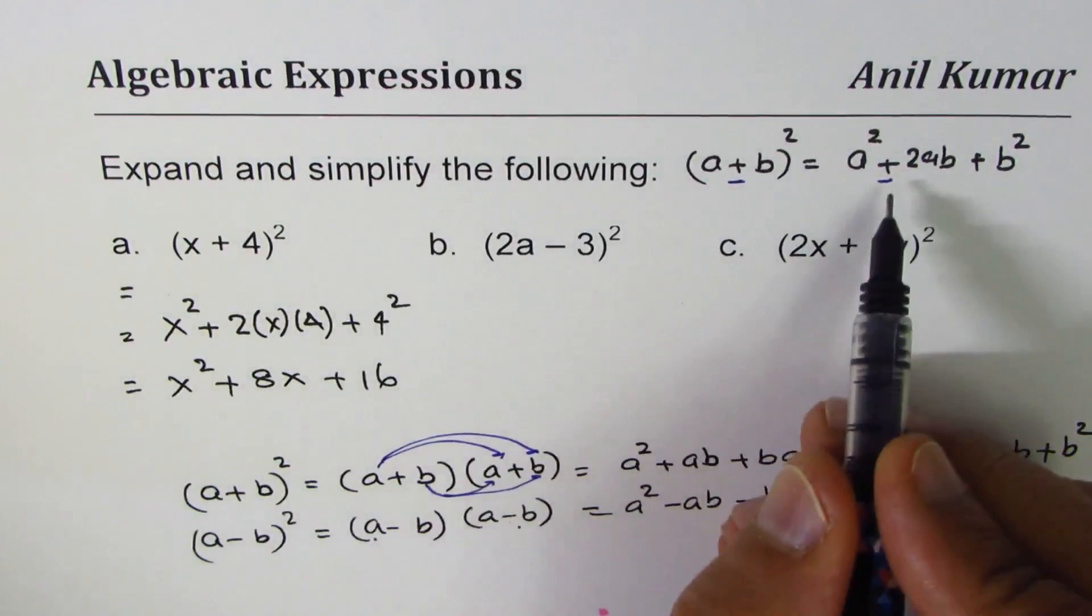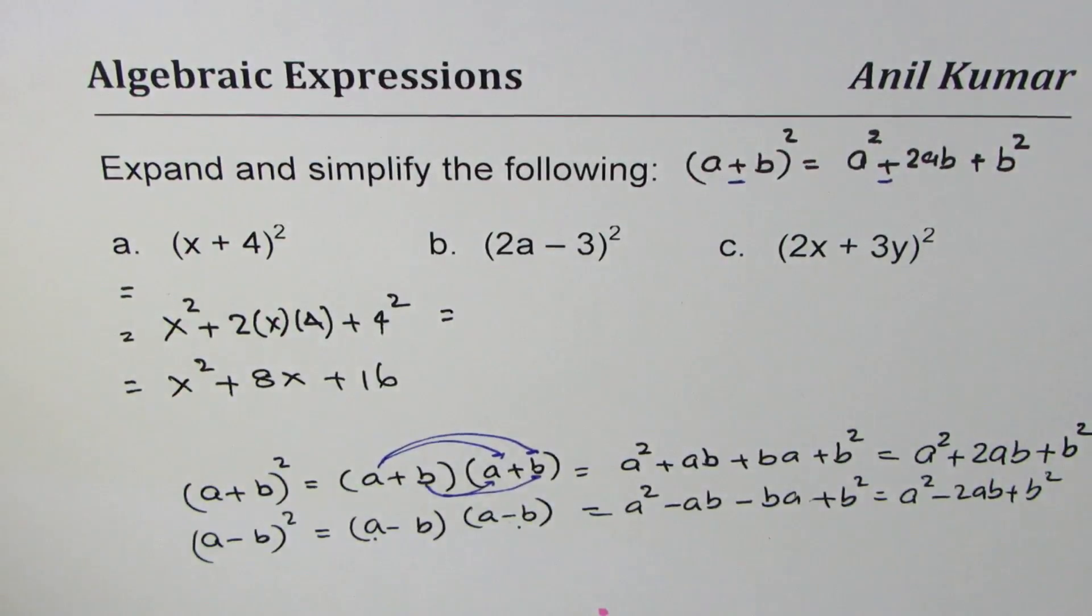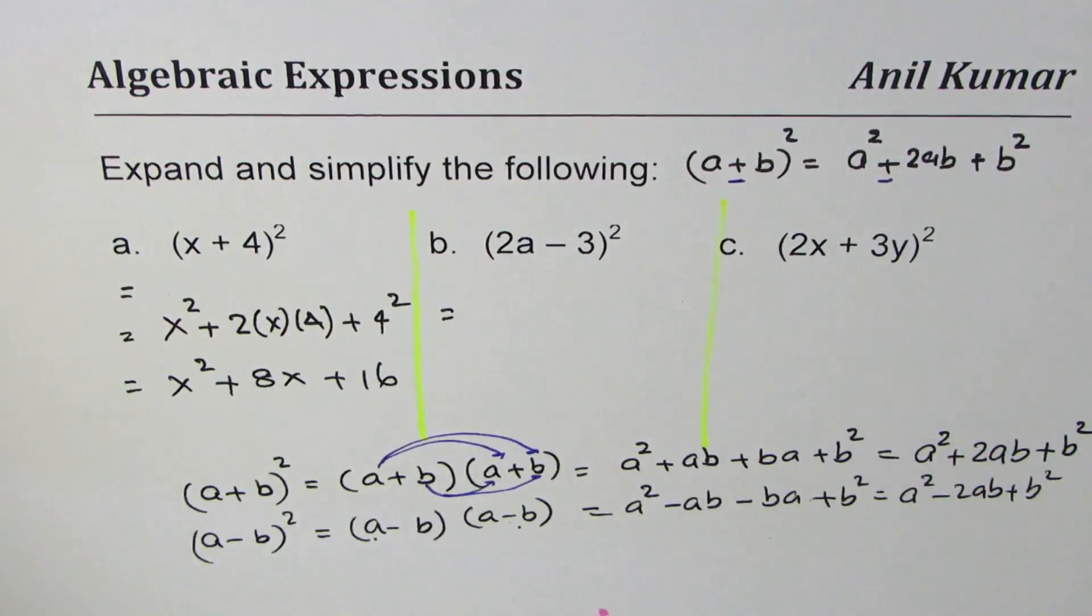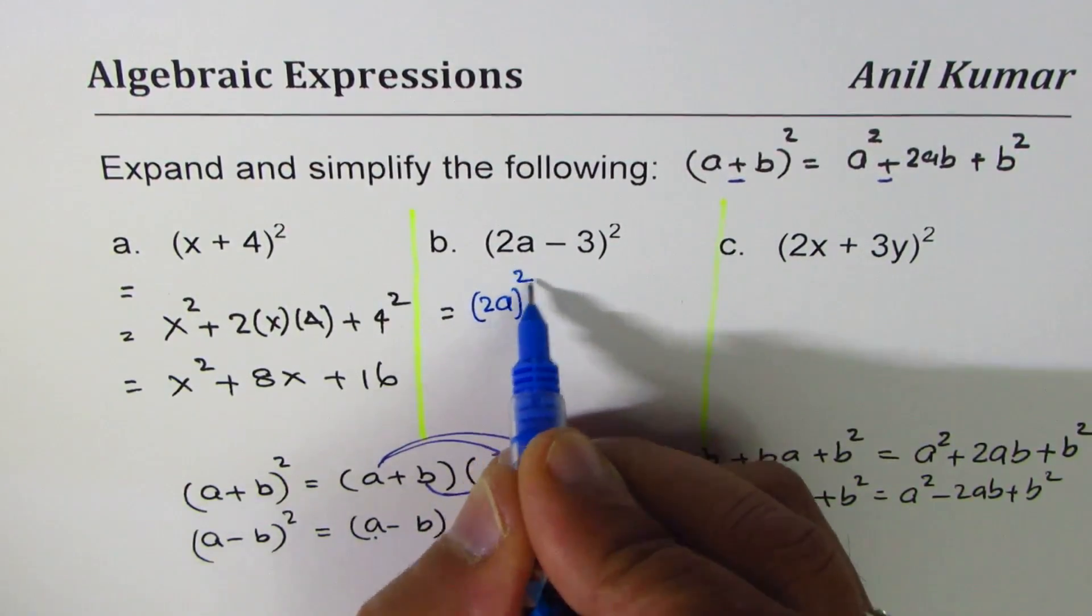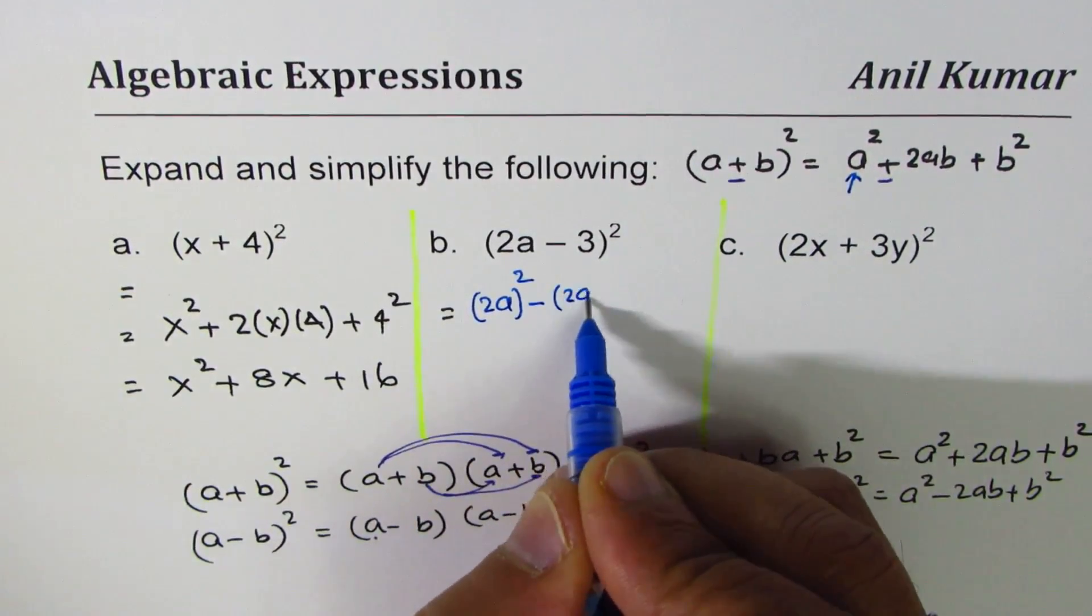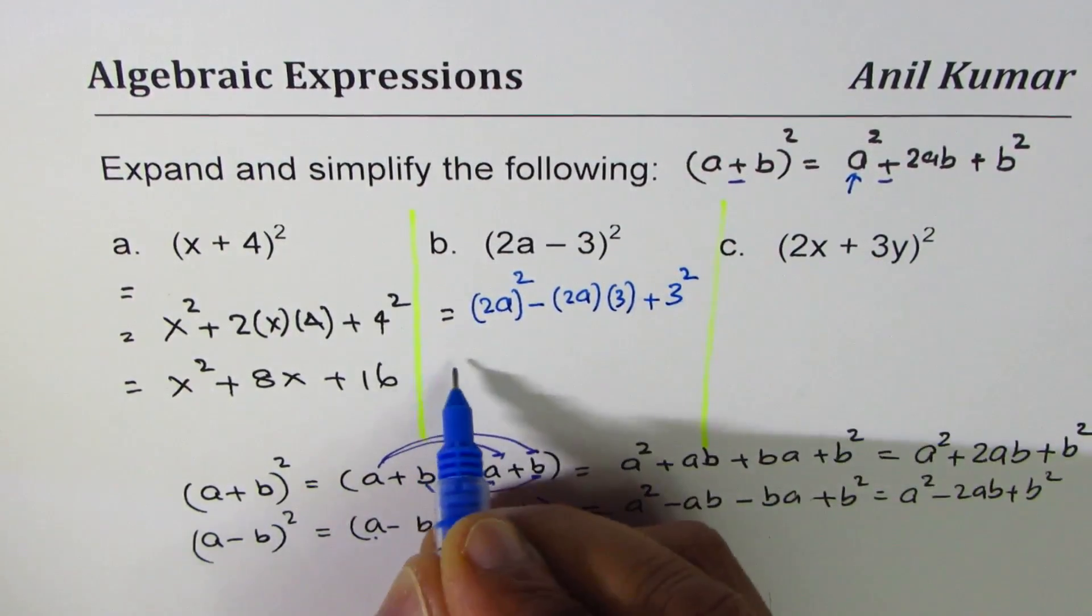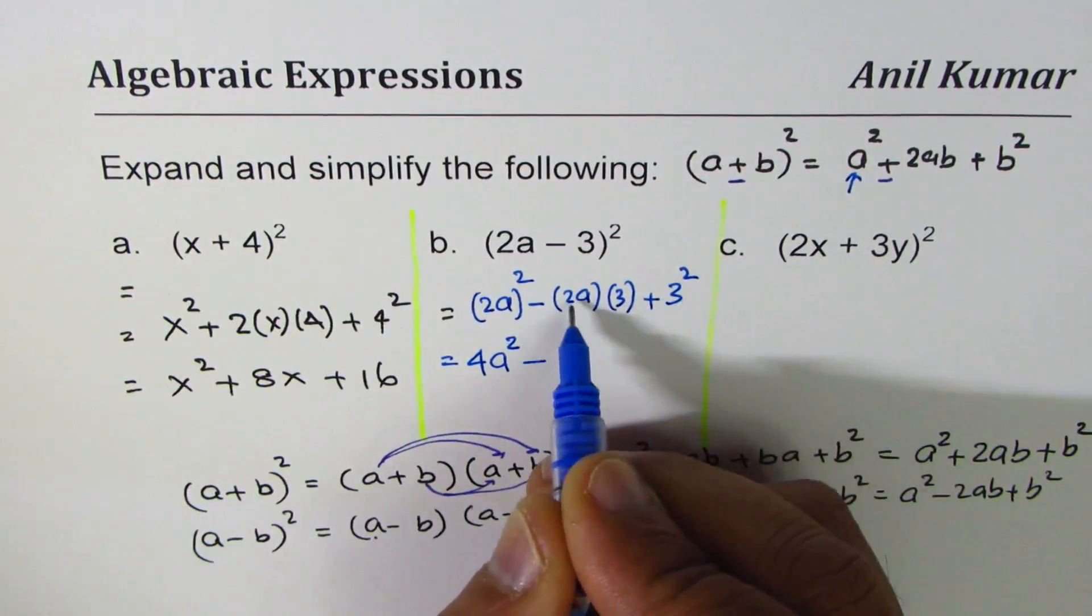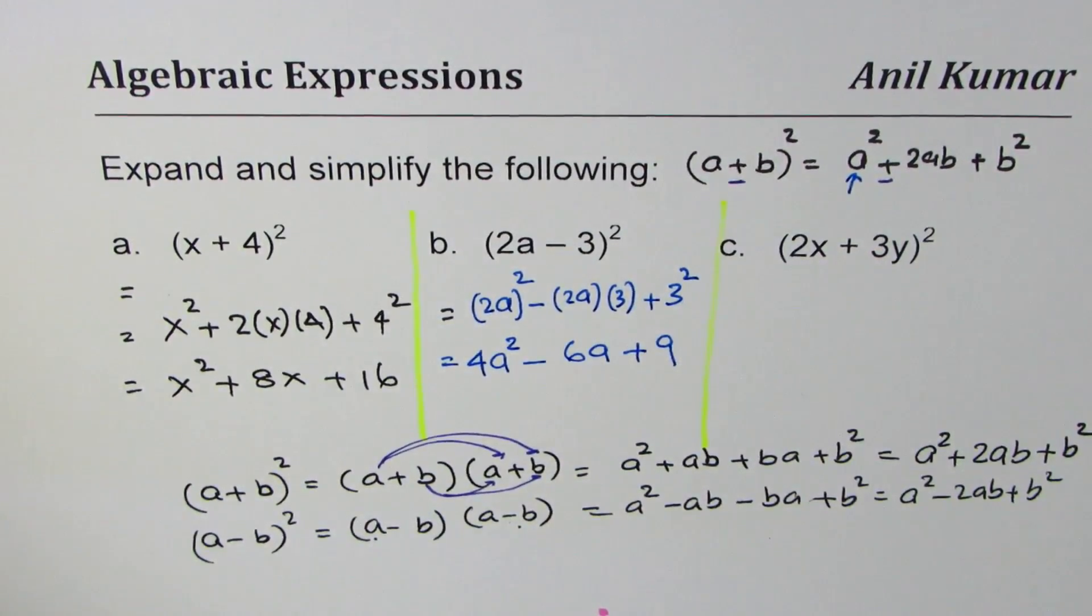This one is with negative, so we will use minus 2ab. So we get 2a whole square, that is first term, minus 2a times 3 plus 3 square. 2a whole square is 4a square and this is 2 times 3 is 6, 6a plus 9. So that is the result.